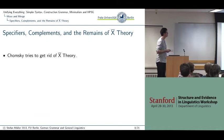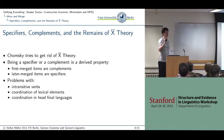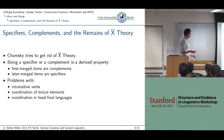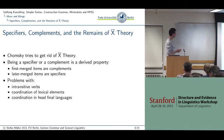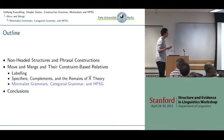Chomsky also tries to get rid of specifiers and complements: first-merged items are complements and later-merged items are specifiers. There are several problems with this view. One is that it's not straightforward to account for intransitive verbs — the solution was to assume an empty element for all intransitive verbs. And there are problems with coordination of lexical elements and coordination in head-final languages. You can read about this in the paper connected to this talk.